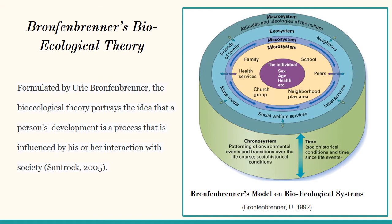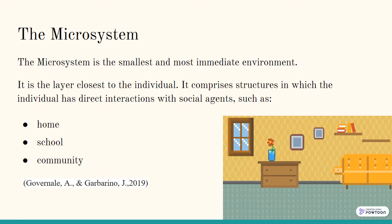The microsystem is defined as the pattern of activities, roles, and interpersonal relationships experienced by a developing person in a particular setting with particular physical and material features, and containing other persons with distinctive characteristics of temperament, personality, and systems of belief. It is the layer closest to the child, comprising structures in which the child has direct interactions with social agents such as home, school, and community.